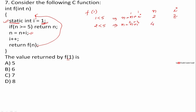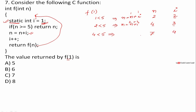Now n is 4, and i is incremented to 3. Since 4 is less than 5, n = n + i = 4 + 3 = 7, and i is incremented to 4. Now 7 is greater than 5, so we return n. Return n means we return 7. So 7 is our answer.